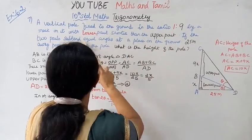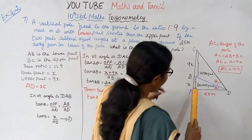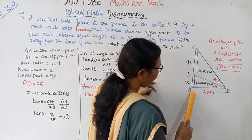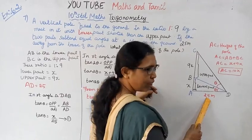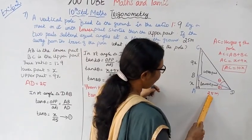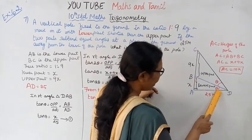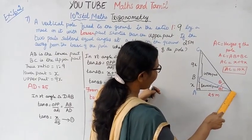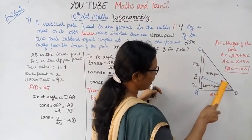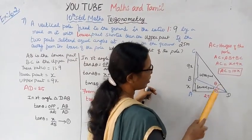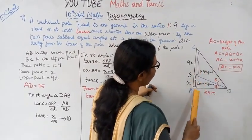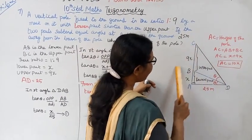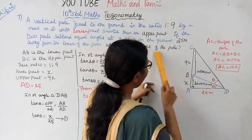The two parts subtend equal angles at a point on the ground. The distance from the pole is 25 meters. The lower part makes angle theta and the upper part also makes angle theta at that point. AC equals AB plus BC, so AC equals x plus 9x equals 10x. AC, which is 10x, is the height of the pole.